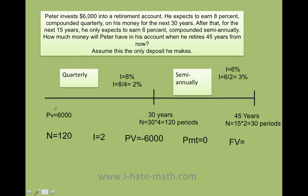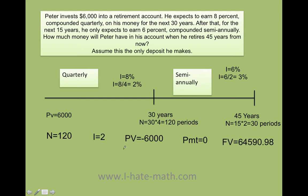The first step is to figure out the future value for phase one. I put into my calculator: N equals 120 periods, I equals 2%, PV equals negative $6,000, and payment equals zero. Then I solve for the future value. I get that my future value is $64,590.98. That tells me that from here to here, this is how much money I have in my account.